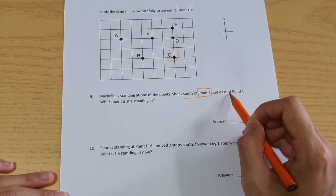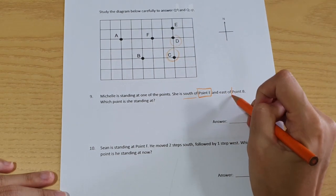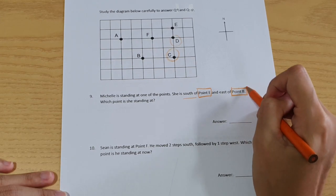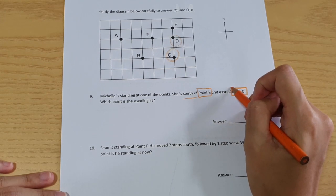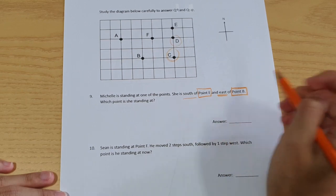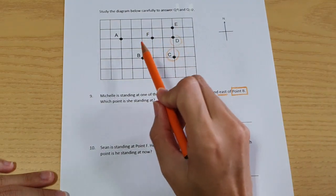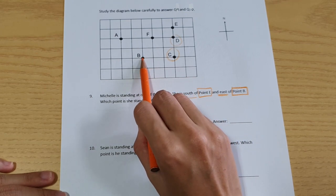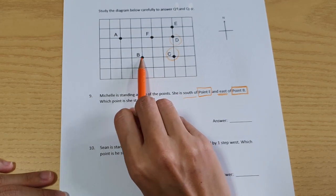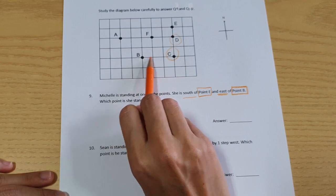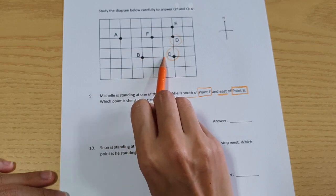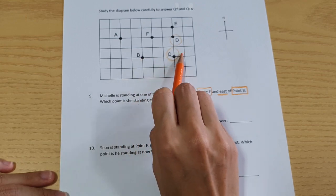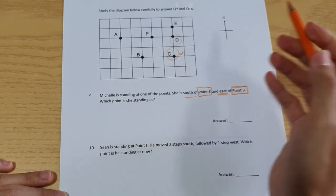East of point B. This means that if I'm standing at point B and I look at Michelle, she will be in the east direction. If I am standing at point B and I look at Michelle, I'll be looking east at her. East is in this direction. So C is our correct answer. Point C.